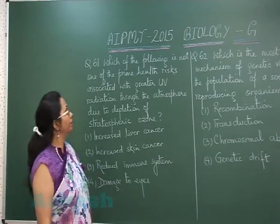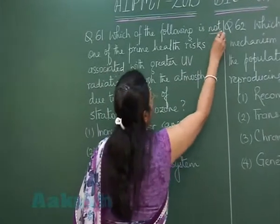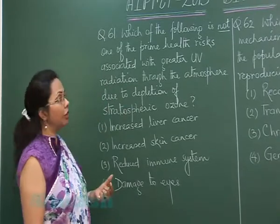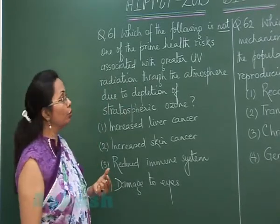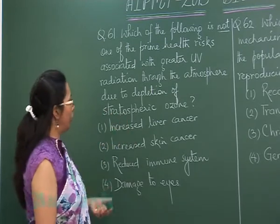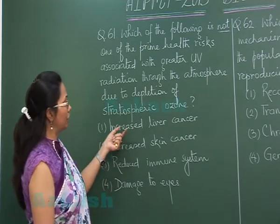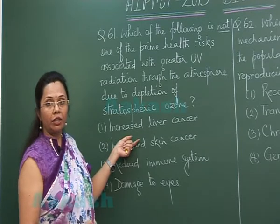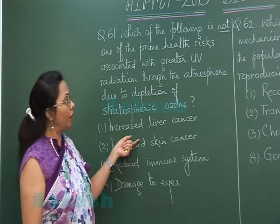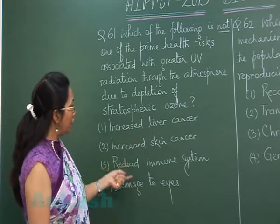Question 61: Which of the following is not one of the prime health risks associated with greater UV radiation through the atmosphere when there is depletion of the ozone layer? The options include increased liver cancer. Now, liver cancer is associated with alcoholism and hepatitis B infection, but it is not linked to UV radiation.